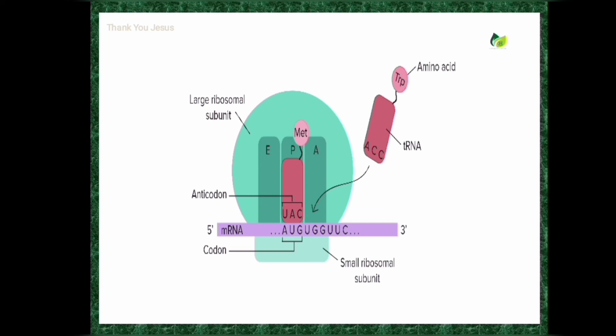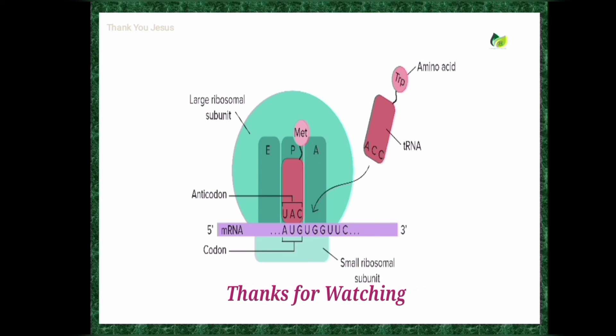This is an important distinction: the first tRNA always binds on the P site, while the second tRNA onwards — whether there are 200 or 300 amino acids being added to the polypeptide chain — they are added to the A site. First always binds on P site; that is the important feature of protein synthesis you should remember. Thank you.